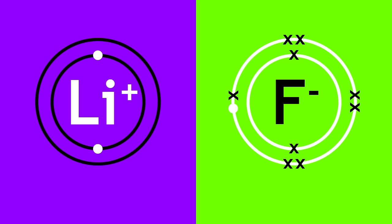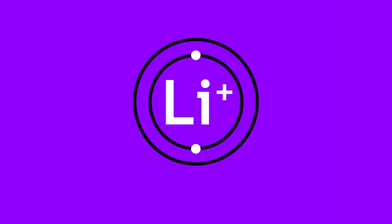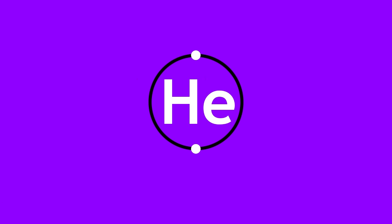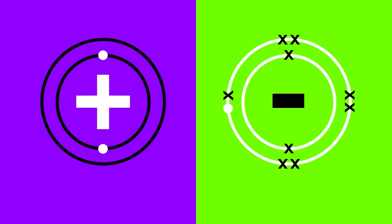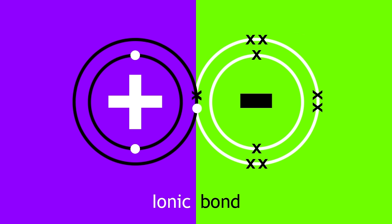It's a common misconception that there must be 8 electrons in an electron shell for a species to be stable. As long as the electron shell in question is full, it will be stable. This is seen with lithium — the first electron shell can only hold 2 electrons, and this shell is full, so a lithium ion is stable. Note that it has the same electronic structure as a helium atom. The lithium ion and the fluoride ion are oppositely charged and will be electrostatically attracted to one another, thereby forming an ionic bond.